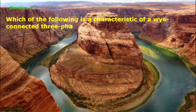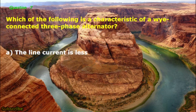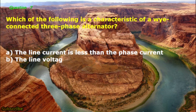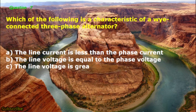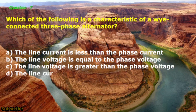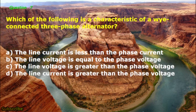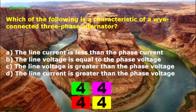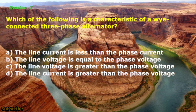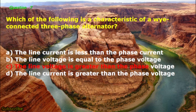Question No. 7: Which of the following is a characteristic of a Y-connected three-phase alternator? A. The line current is less than the phase current, B. The line voltage is equal to the phase voltage, C. The line voltage is greater than the phase voltage, D. The line current is greater than the phase current. The correct answer is letter C: The line voltage is greater than the phase voltage.